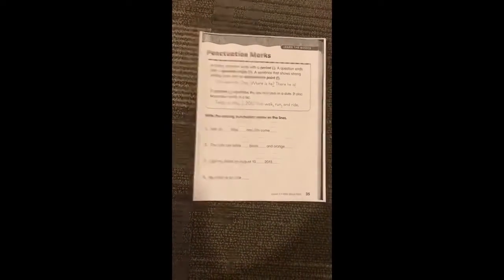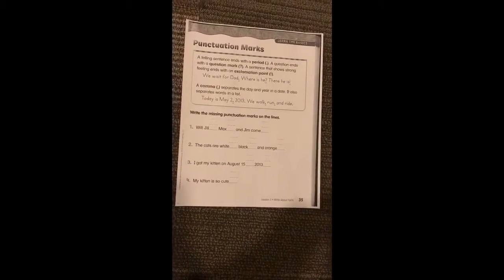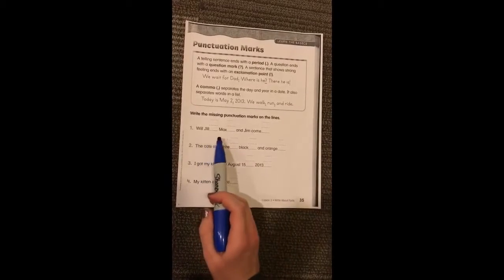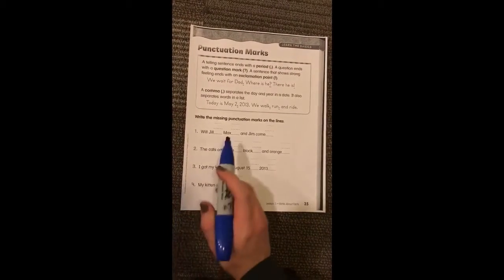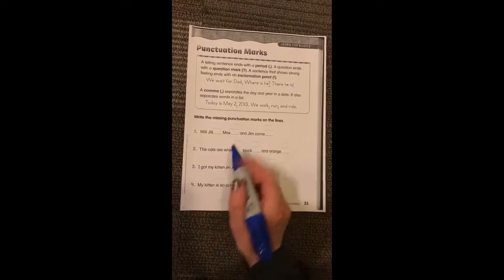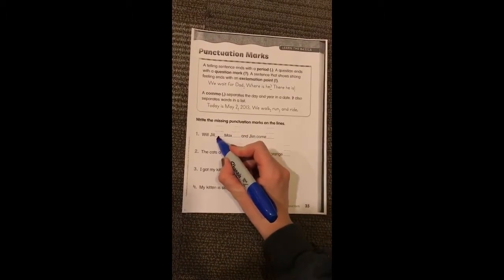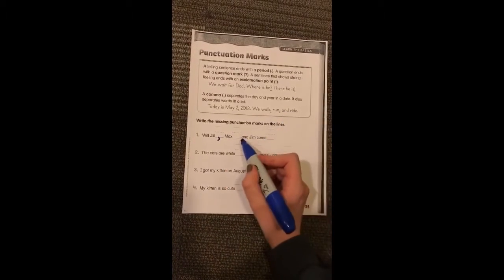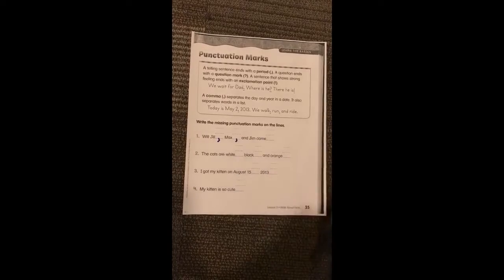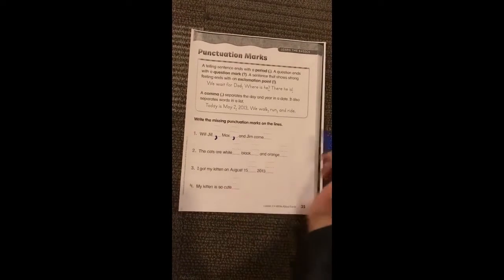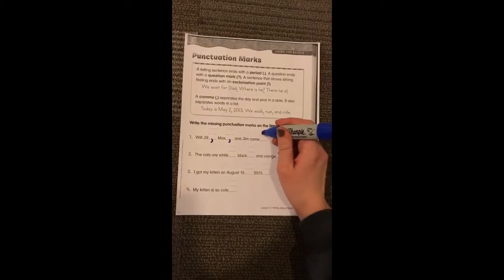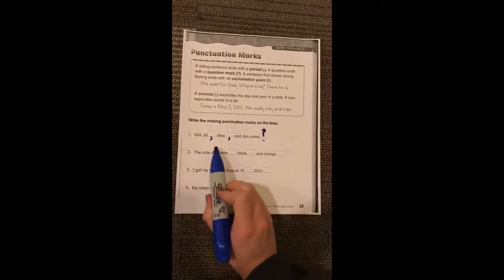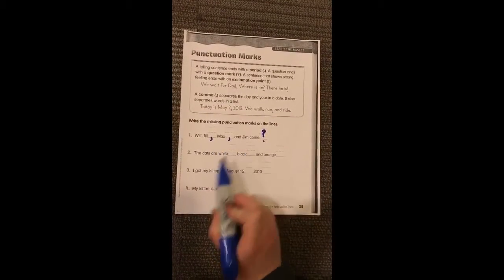Down here we're going to practice filling in the missing punctuation marks. It says: Will Jill, Max, and Jim come? I noticed that this is a list of words, so I'm going to put commas after Jill and Max. And then it's a question, so I'm going to end it with a question mark. Will Jill, Max, and Jim come?